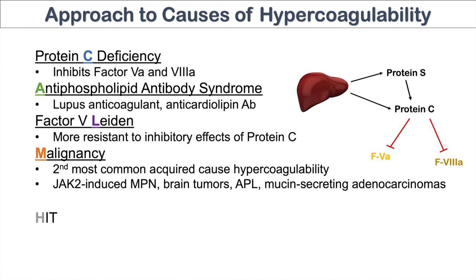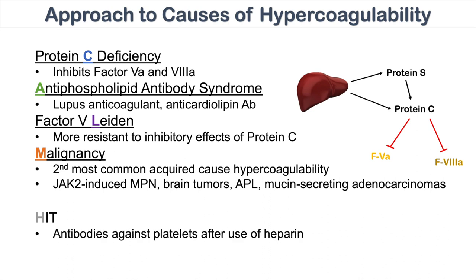With regards to the H in our mnemonic, HIT or heparin-induced thrombocytopenia is a condition where the body makes antibodies against platelets after the use of heparin. The platelet count drops due to antibodies being produced against those platelets, all due to heparin. The treatment is to stop heparin use.